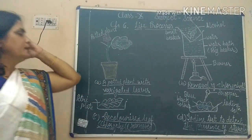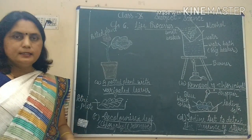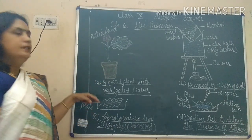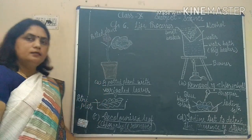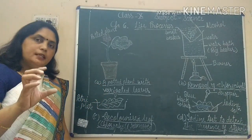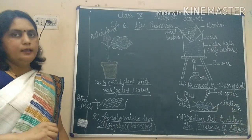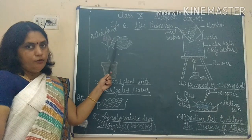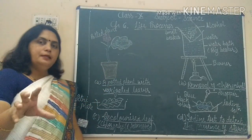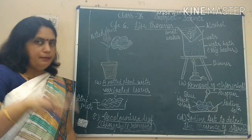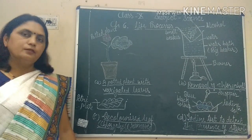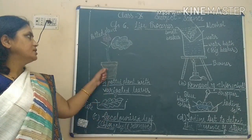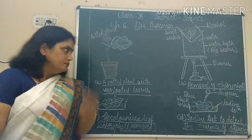Now the third experiment is to prove that chlorophyll is necessary for photosynthesis. For this we take a potted plant with variegated leaves. Variegated leaves are leaves in which some parts are green in color and some parts are non-green, that is white or yellowish. Only the green parts have chlorophyll; the non-green parts do not. One example of such a plant is croton.